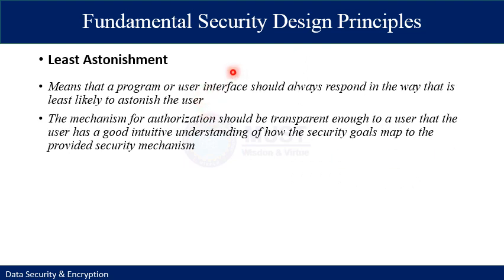The final fundamental security design principle is least astonishment. It means the program or user interface should always respond in a way that is least likely to astonish the user. The mechanism for authorization should be transparent enough to the user, and the user should have a good intuitive understanding of how security maps to the provided security mechanism.